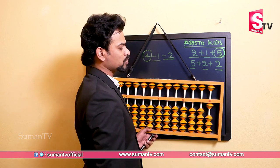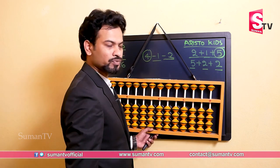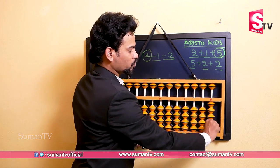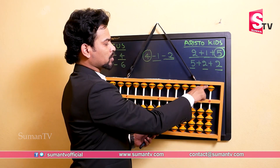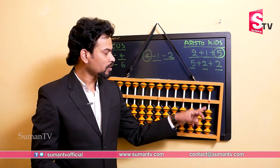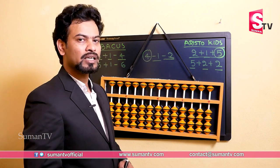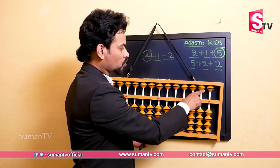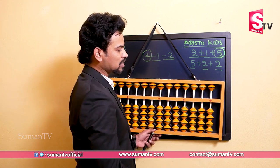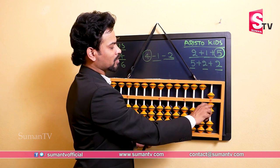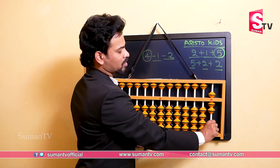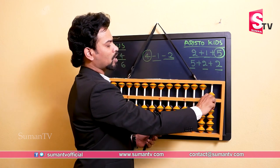Moving one bead up is plus one; down is minus one. Moving two beads up is plus two; down is minus two. Plus four and minus four. Plus five means bringing the upper bead down; minus five means pushing it up. To make six: five plus one — bring the upper bead down and one lower bead up. Seven is five plus two. Nine is five plus four: six, seven, eight, nine. Like this we can represent numbers up to nine.